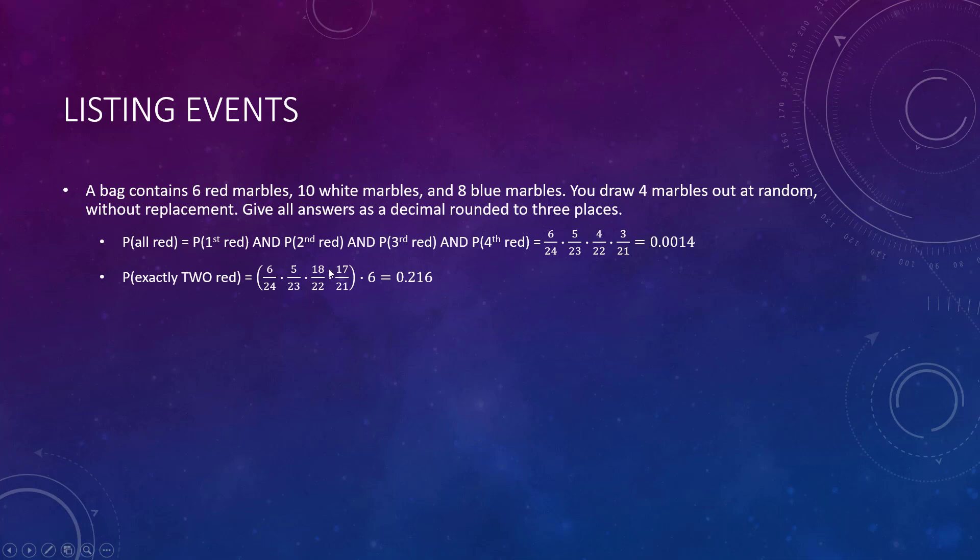Probability exactly two red: the first one's red and the second one's red. You might say, well what if the first one's red and the last one's red? It doesn't matter because of the AND being multiplied. Then this would be the leftover marbles, 10 plus 8 is 18, and now we're down to 22, and then 17 out of 21.